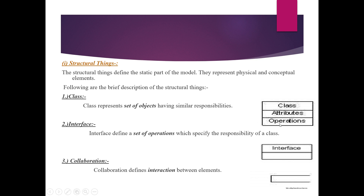When we use UML as a language for depicting a software design system, the class diagram shows the class name, class attributes, and operations — these three things are among the most important parts. Moving on to interface: interface defines a set of operations which specify the responsibility of a class, providing a bridge between components.